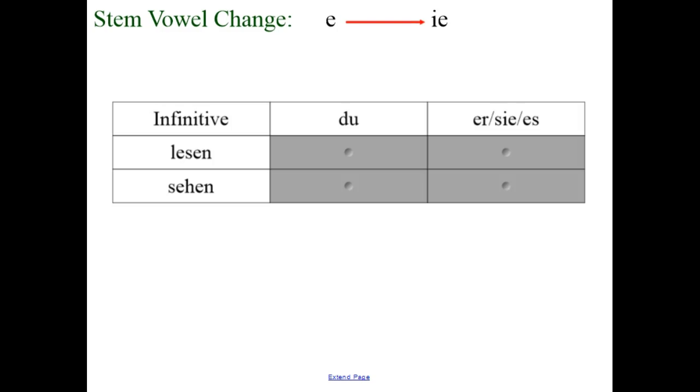And the third stem vowel change that you might see is an E changing to an IE. Lesen: du liest, er/sie/es liest. And sehen: du siehst, er/sie/es sieht.